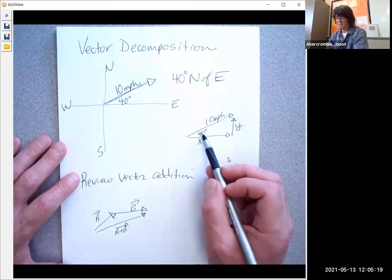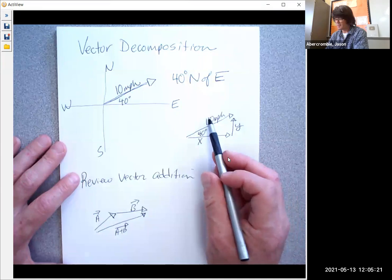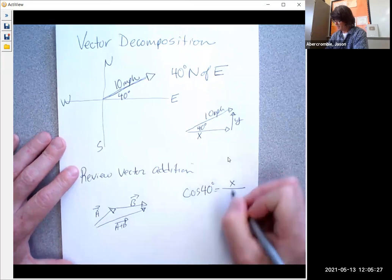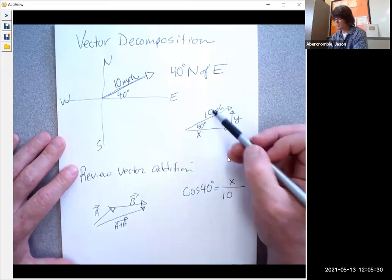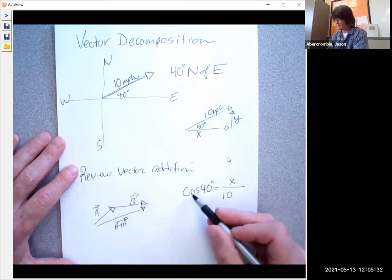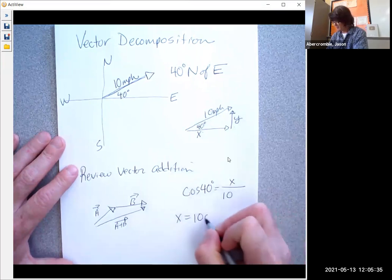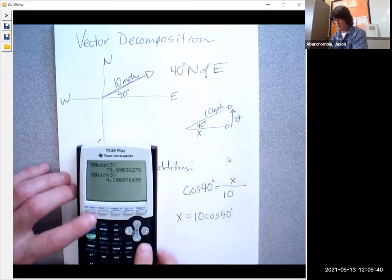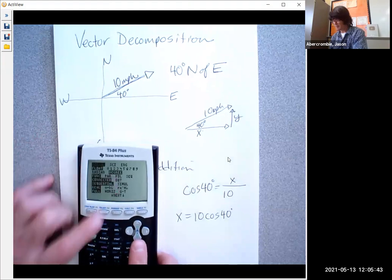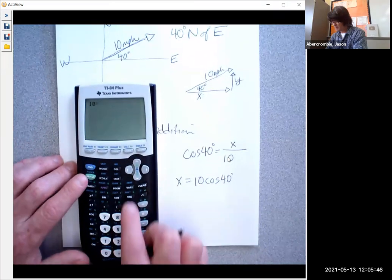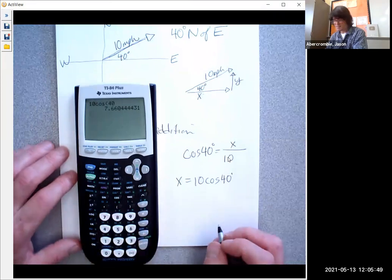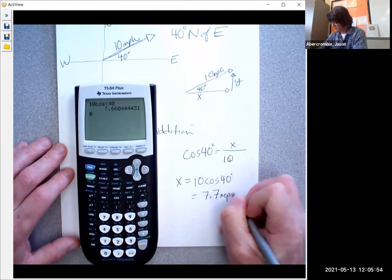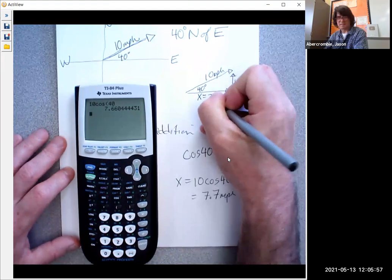We'll start with x. This is adjacent and that's the hypotenuse. So cosine 40 degrees is x over 10, adjacent over hypotenuse. If you multiply by 10, x equals 10 cosine 40 degrees. I'm in degree mode right here on my calculator and we can just do 10 cosine 40 and get 7.6, call it 7.7.